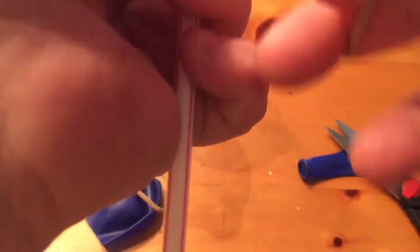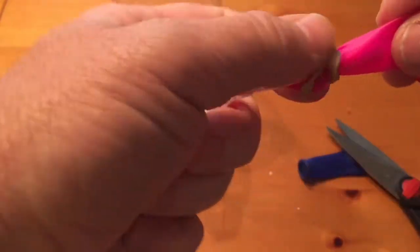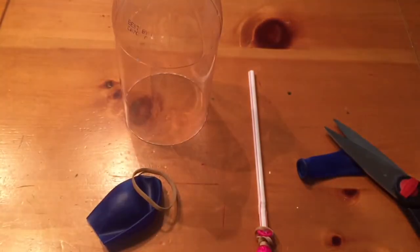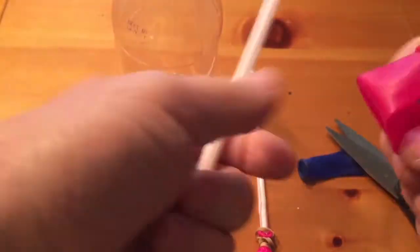So you do about three or four times around and it will securely hold that balloon onto the straw like so. And then we're going to do the second straw, same thing, so we have both straws together.